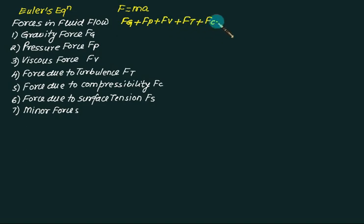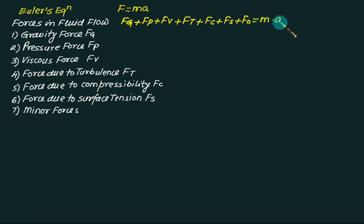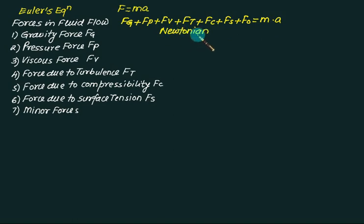So this total force F consists of seven components: Fg plus Fp plus Fv plus Ft plus Fc plus Fs plus all other forces, equals ma. Solving this governing equation gives what is called the Newtonian equation of motion.